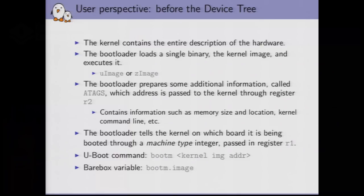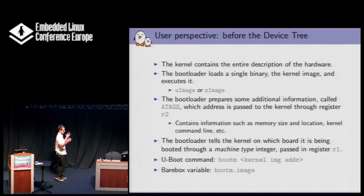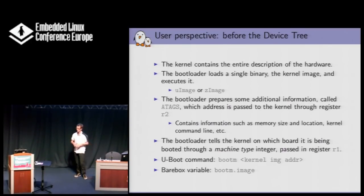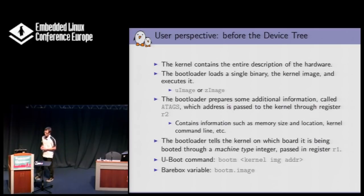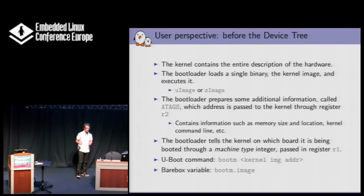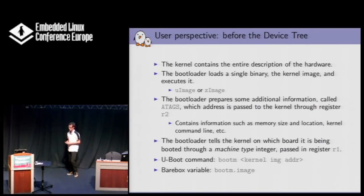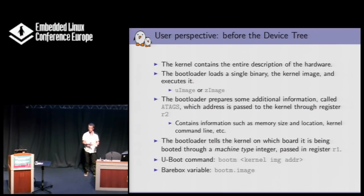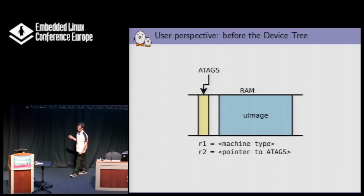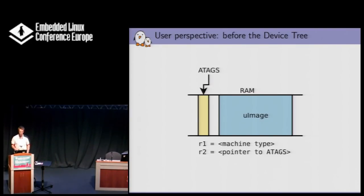Before the device tree, when you wanted to use a kernel on ARM, the kernel completely contained the entire description of the hardware in terms of C-based structures describing all the platform devices, I2C devices, SPI devices. The kernel was self-sufficient. You had a single binary image. Your bootloader put that into memory, started it, and before starting it, gave it a few pieces of information: the machine number in register R1, and an atag set of information - a data structure the bootloader builds with info such as memory location and size, the kernel command line, and other things - passed to the kernel at some location in R2. Most or all of the hardware description was inside the kernel itself.